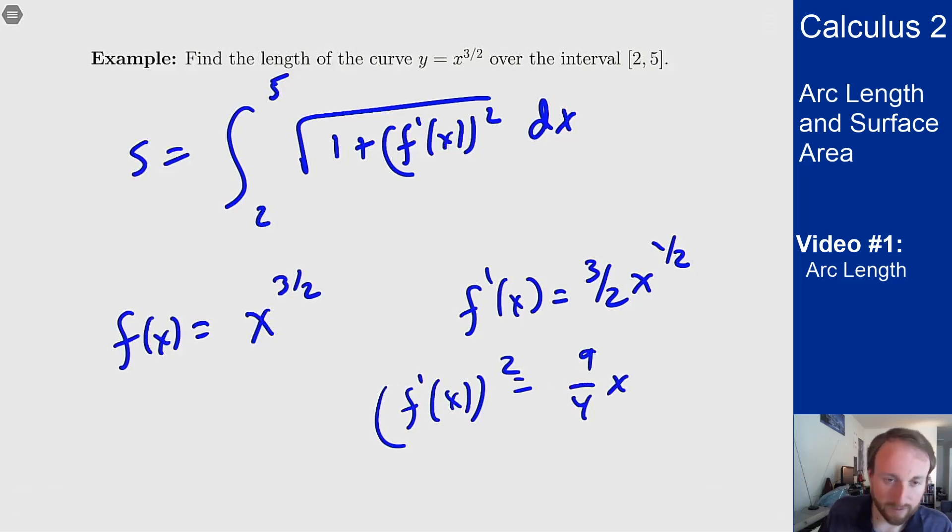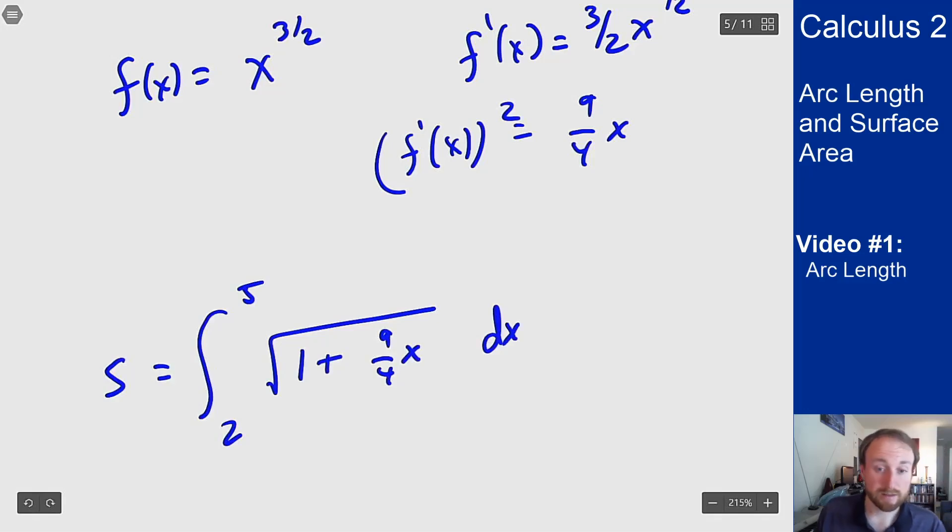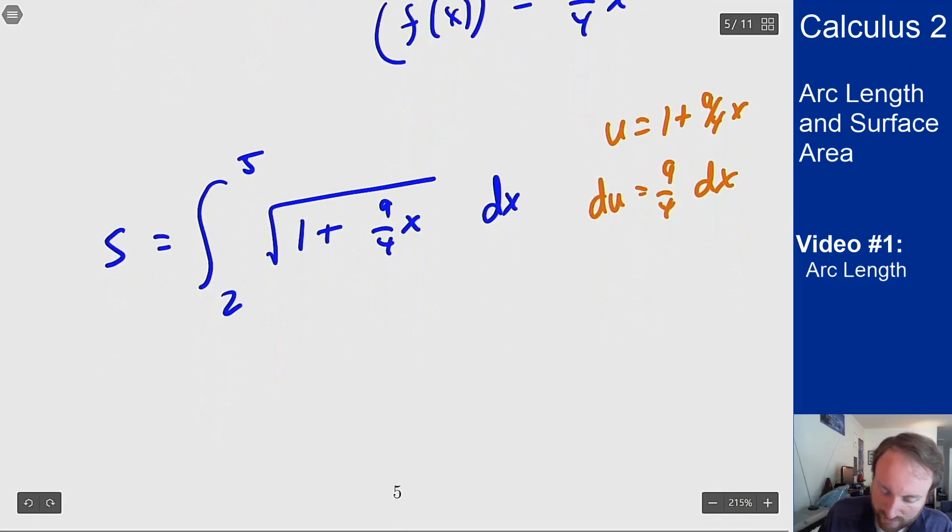My arc length is then s equals the integral from 2 to 5 of the square root of 1 plus (9/4)x dx. This is one case where we can actually integrate this function. We'll let u be 1 plus (9/4)x, so du is (9/4)dx. This becomes an integral of (4/9) times the square root of u du.